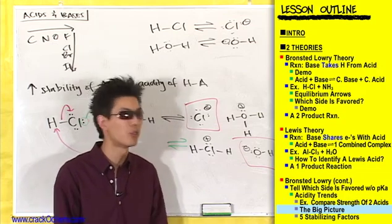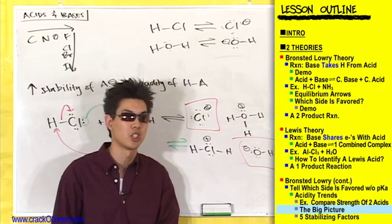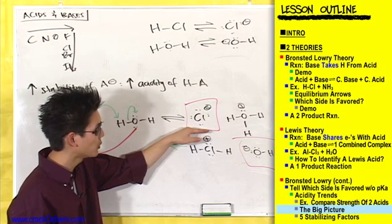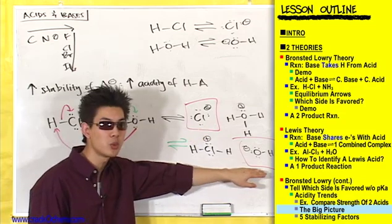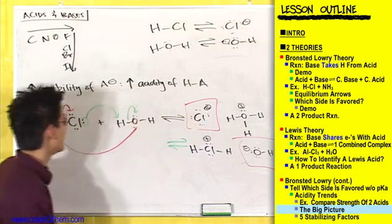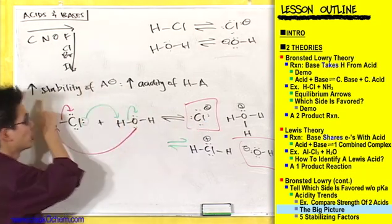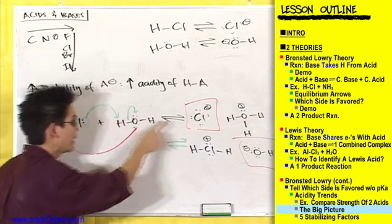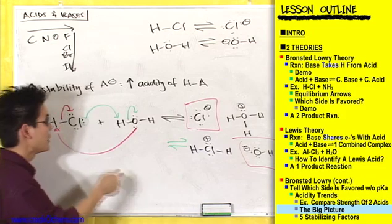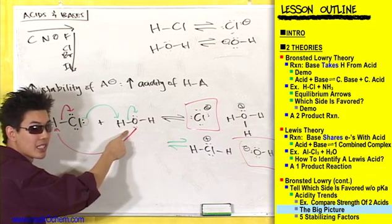A Cl with a minus charge is more stable than an oxygen with a minus charge - take my word for it for now, you'll see why in just a second. If Cl minus is more stable, then Cl minus is the more stable conjugate base, meaning HCl is the stronger acid. Increase the stability of your conjugate base and you have the stronger, more acidic acid. That means HCl is going to be the acid and water is going to be the base.